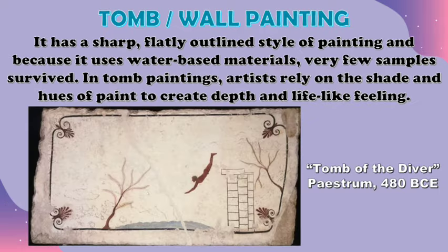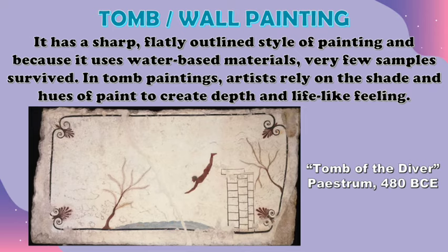Another method is Tomb or Wall Painting, which was very popular during the classical period. It uses fresco methods — either tempera or water-based — or encaustic using wax. It has a sharp, flatly outlined style of painting, and because it uses water-based materials, very few samples survived. In tomb paintings, artists rely on the shade and hues of paint to create depth and a lifelike feeling. Here is an example of a wall painting made in Paestum in 480 BC, entitled Tomb of the Diver.